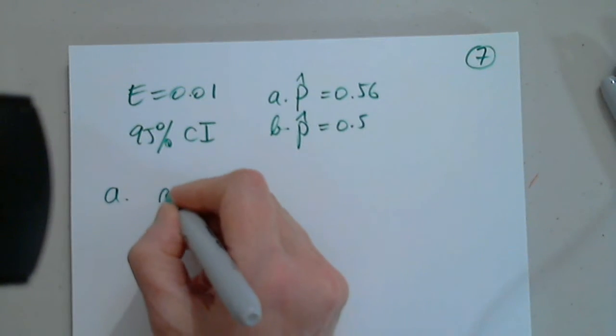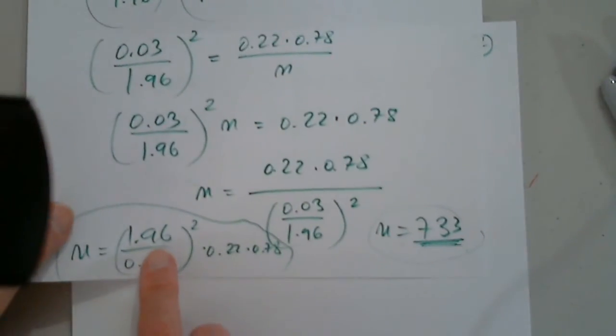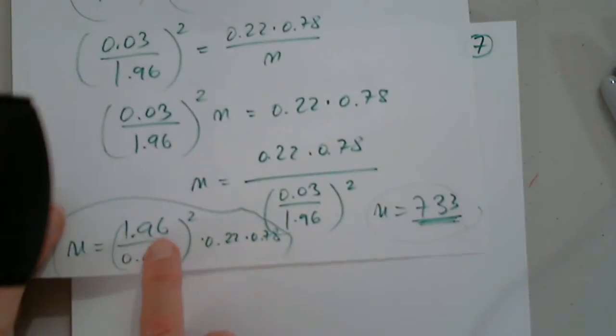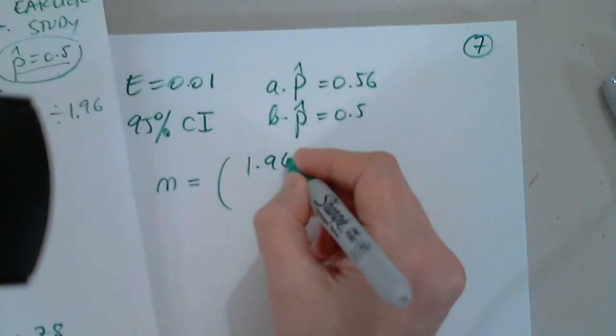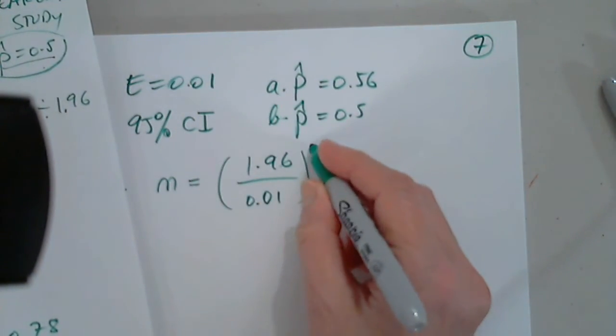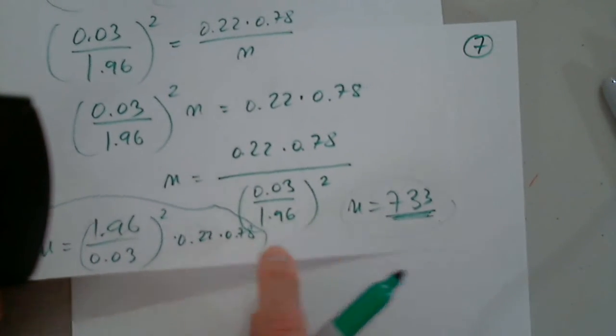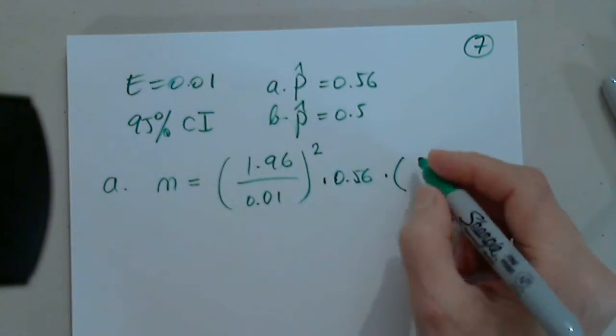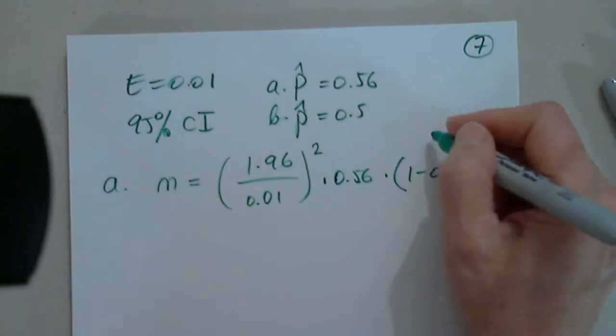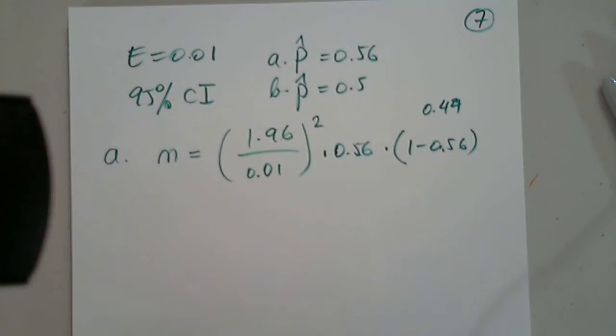So for part A, we're asked to find n. And for part B, the same thing. And remember how we got to this. So since it's 95%, I'm going to use the same alpha. But now the margin of error is 0.01. So this is 1.96 divided by the margin of error squared. And now we multiply by p-hat and 1 minus p-hat. So multiply by 0.56 and I'll write it here, 1 minus 0.56, which is 0.44.